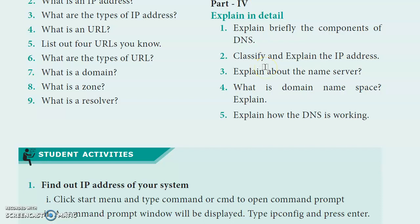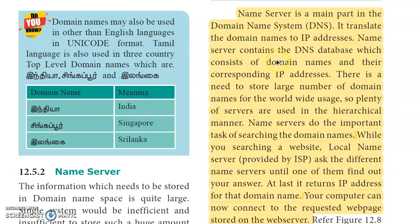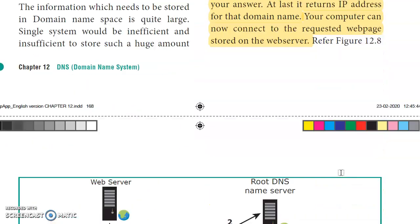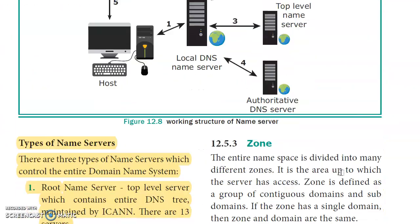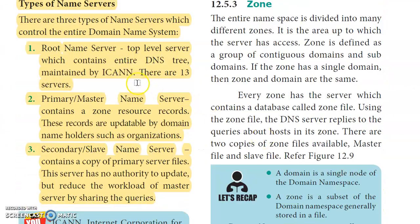Third component - Zone: The zone represents the contiguous area up to which the server can access. The name server checks the types of name servers and handles the zone accordingly.